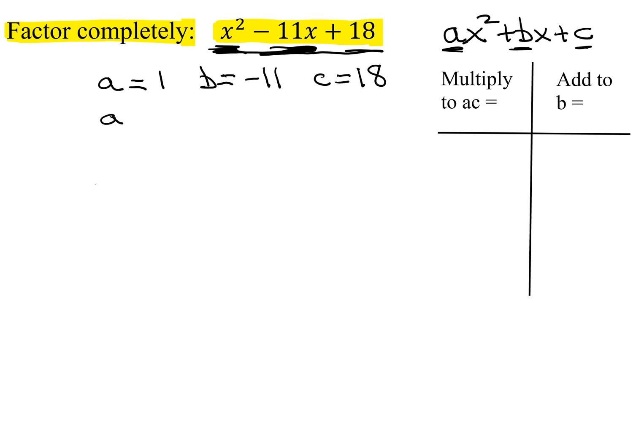So a times c is 1 times 18, which is 18. So over here in my t-chart, I need two numbers that multiply to a times c, which is 18, and they add to b, that is negative 11.